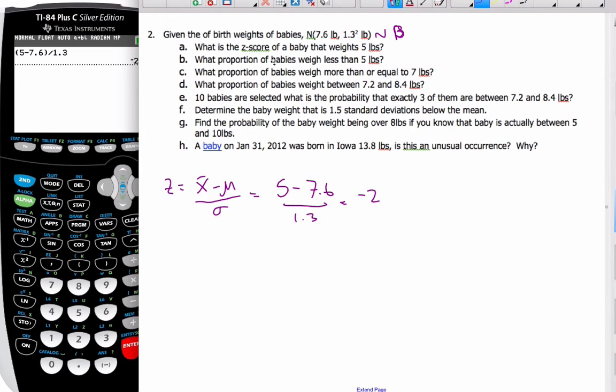What proportion of babies weigh less than 5 pounds? This is part A. If I make my normal curve, here is my mean of 7.6. Here is 5. I know this is two standard deviations.